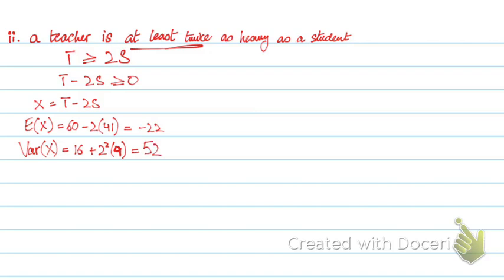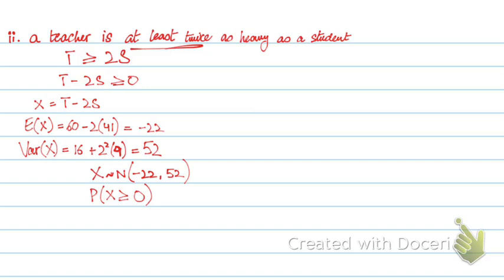The variance of students was 9, not 4. So X follows a normal distribution with mean minus 22 and variance 52. Since X equals T minus 2S and we need T minus 2S greater than or equal to 0, we find P(X ≥ 0). Then standardize to Z and calculate the probability using a calculator or Z distribution table.